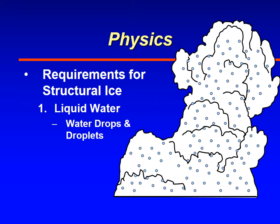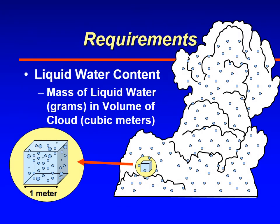Liquid water is found in cloud in the form of water droplets and also larger spheres, which we call drops. To quantify how much water is in cloud, meteorologists came up with the term liquid water content. By definition, liquid water content is the mass of liquid water in a volume of cloud, usually expressed in grams per cubic meter.